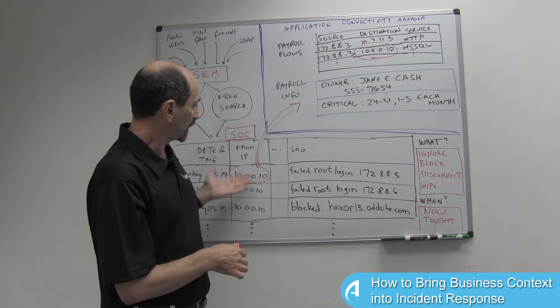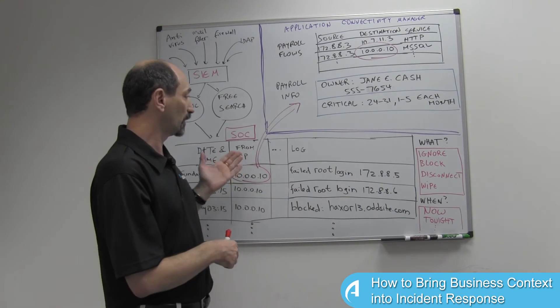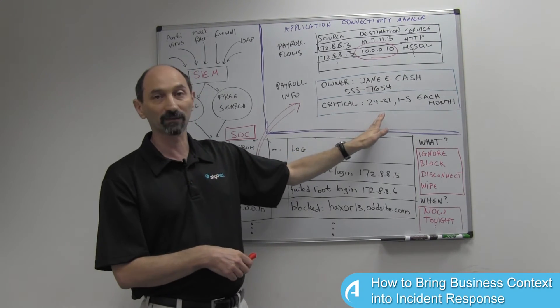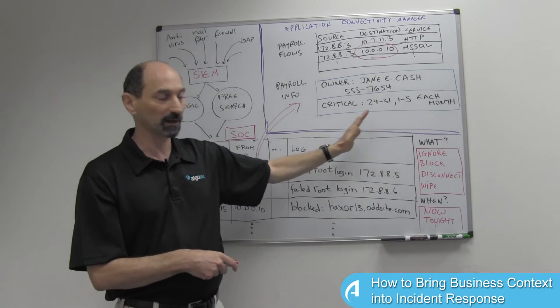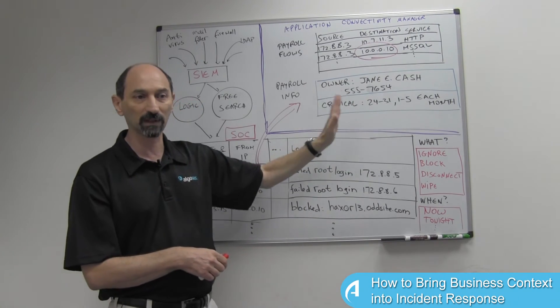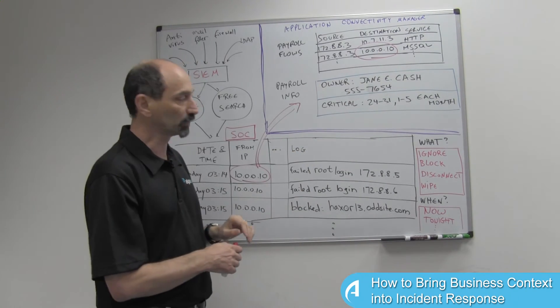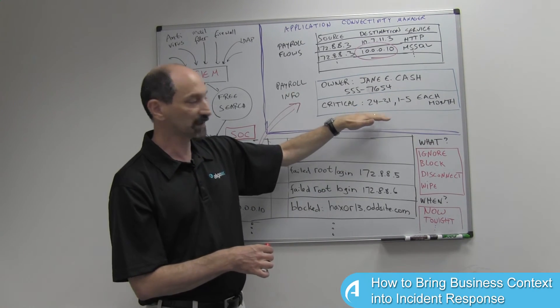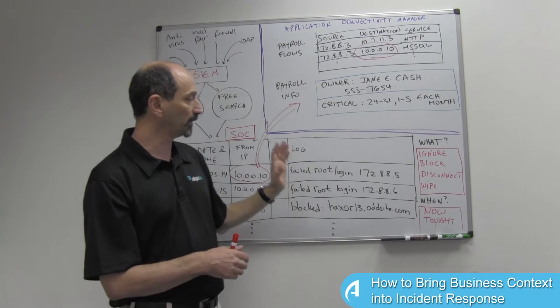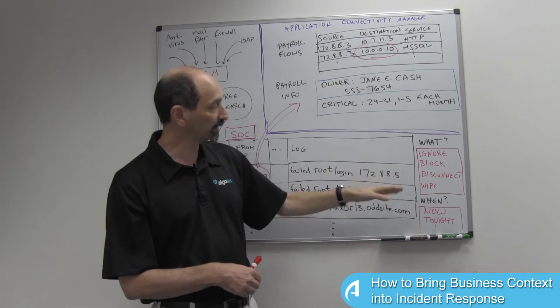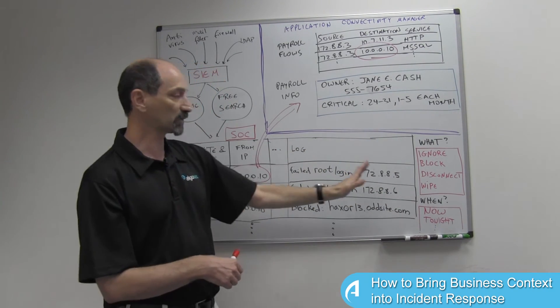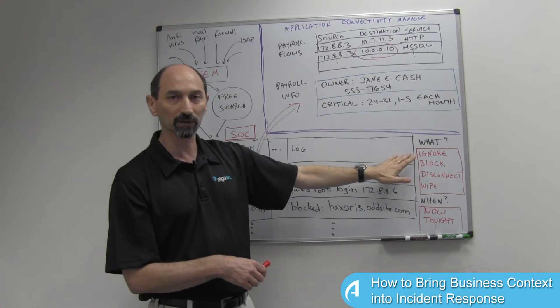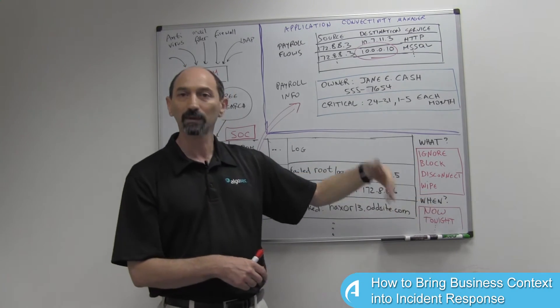For instance, you can look at the calendar and say, well okay, today we're at the beginning of the month. It's not a good idea to shut down the payroll system today. Maybe we'll wait a day or two because the threat doesn't seem to be terrible and the system is really important right now. So maybe it's good enough temporarily to just block access externally using the network filters and schedule the wipe to a later time.